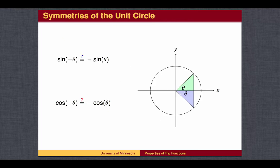We can use the symmetry of the circle to find the value of sine and cosine for negative angles. Let's think about what these equations say for angles between 0 and 90 degrees. When the original angle is in the first quadrant, the corresponding negative angle will be in the fourth quadrant. Sine values in the fourth quadrant are negative, while cosine values in the fourth quadrant are positive. The sine value in the first quadrant is positive, while the sine value in the fourth quadrant is negative.